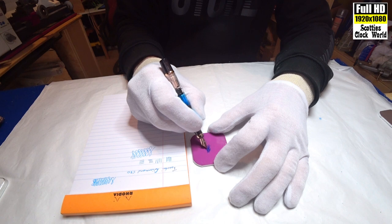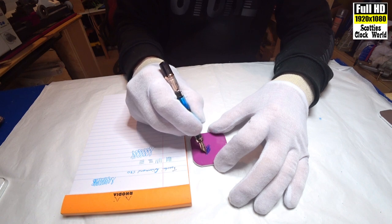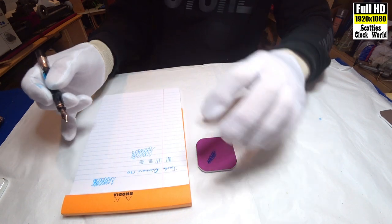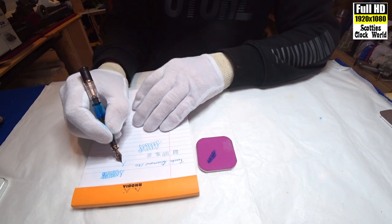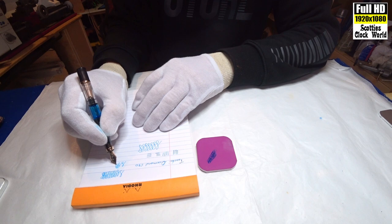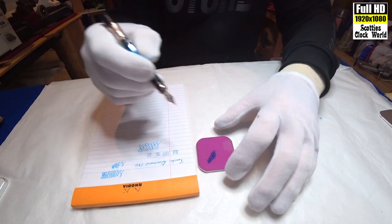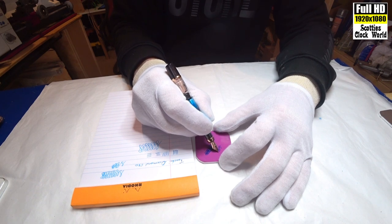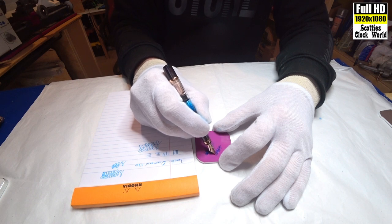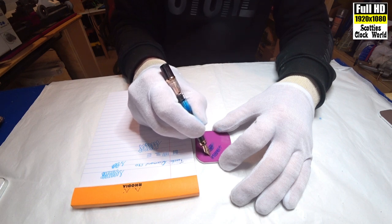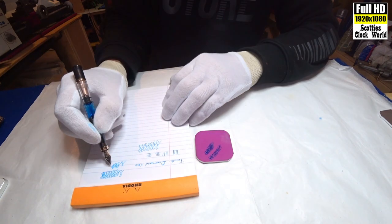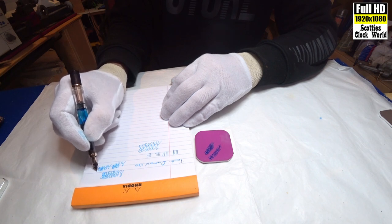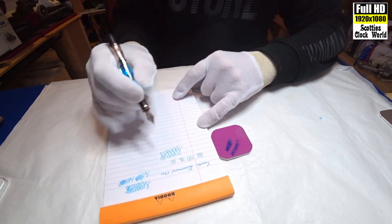Medium pressure. We don't want it hard. We'll do a dozen figure eights for a start and then test the nib again. Still a little bit scratchy. Do another go. It's feeling better. Let's try that.